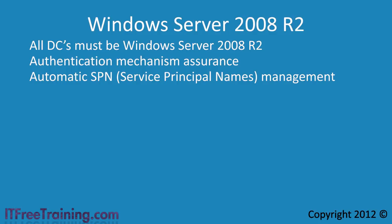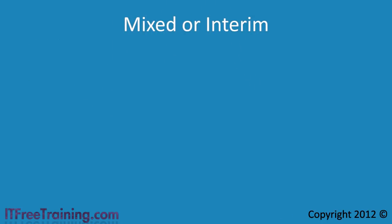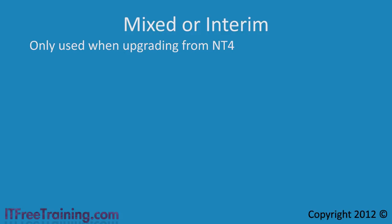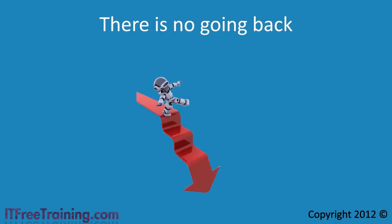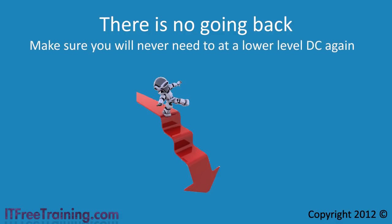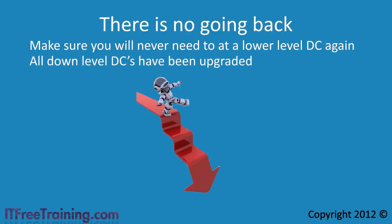That's it for the domain functional levels. For completeness, if you ever see domain functional levels with 'mixed' or 'interim' in the name, these are domains in the process of being upgraded from Windows NT 4. If you no longer have any NT domain controllers on your network, raise your domain functional level to one of the levels mentioned in this video. Also note that once you raise the domain functional level, you cannot go back to a lower level. Ensure you will never need to add lower-level domain controllers and that any down-level domain controllers have been upgraded or removed before raising the level.